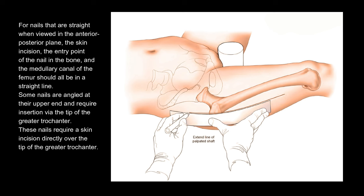Some nails are angled at their upper end and require insertion via the tip of the greater trochanter. These nails require a skin incision directly over the tip of the greater trochanter.